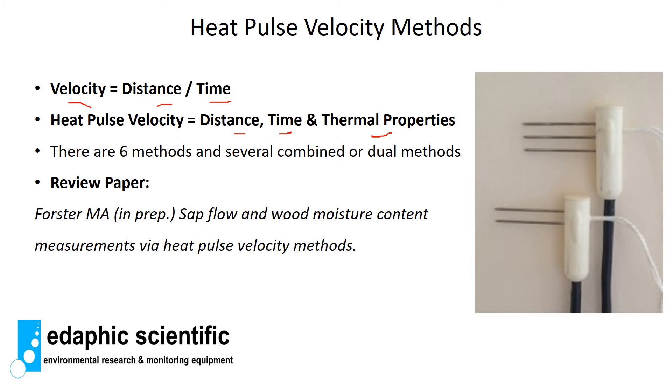If you're not familiar with sap flow or heat pulse velocity sensors, here's a couple of examples on this side of the screen. We have a three probe configuration and a two probe configuration. With a three probe configuration we have a central heater and a downstream and an upstream temperature sensor. We also call the downstream the above sensor and the upstream the below sensor. With a two probe configuration we have a heater sensor and then a downstream temperature sensor.